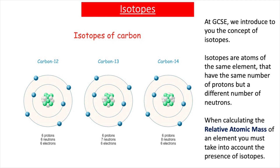On this slide, we have isotopes of carbon. Carbon has an atomic number of six, so it has six protons. It also has six electrons, but the number of neutrons can vary. Most of the carbon that exists in nature is carbon-12, because it has six protons, six electrons, and six neutrons. But a very small amount is either carbon-13 or carbon-14, where carbon-13 has seven neutrons and carbon-14 has eight neutrons. Because around 99% of the carbon in nature is carbon-12, the presence of isotopes doesn't really affect the relative atomic mass of carbon. So at GCSE it is fine to say that the AR value of carbon is equal to 12.